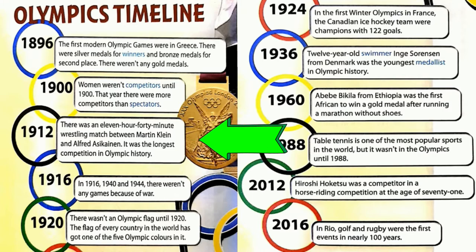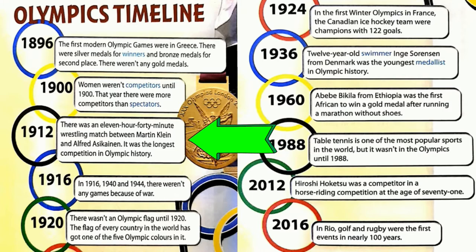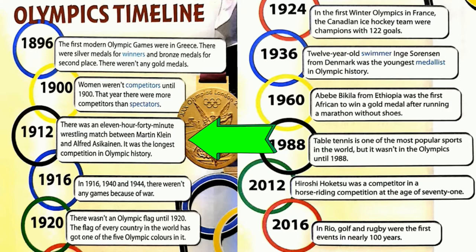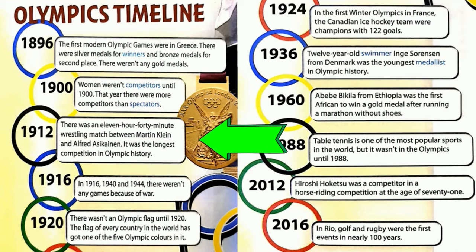1912. There was an 11-hour 40-minute wrestling match between Martin Klein and Alfred Asikainen. It was the longest competition in Olympic history.